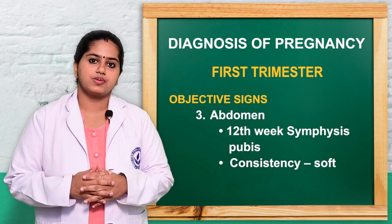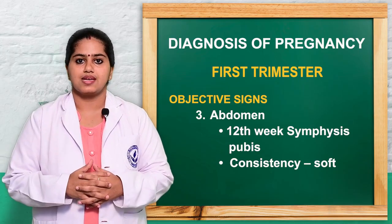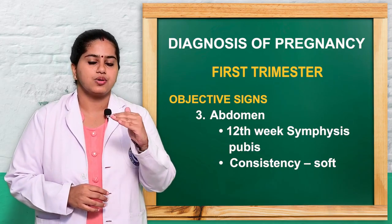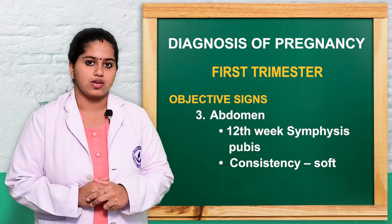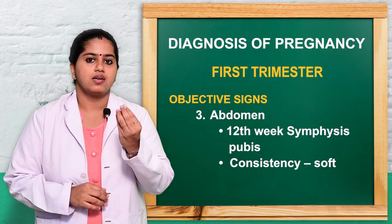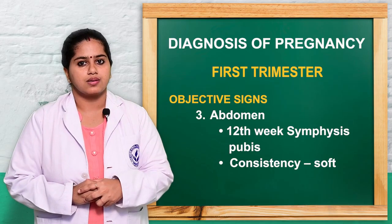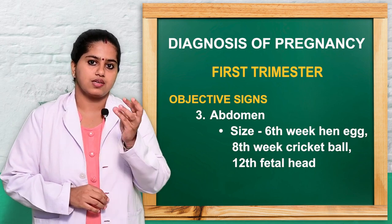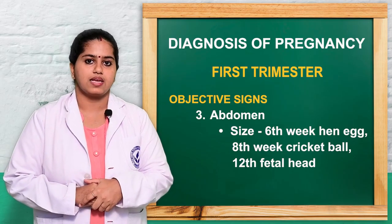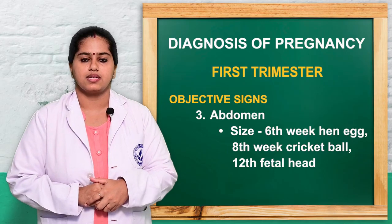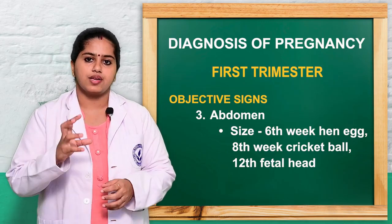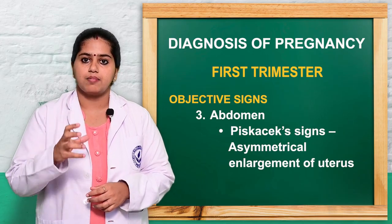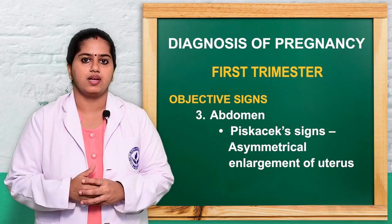The next objective sign is uterine growth, which can be assessed in the abdomen, though much growth does not take place in the early trimester. On palpation, the uterus is palpable at the symphysis pubis at the 12th week of gestation. Regarding size, shape, and consistency, the uterus is soft; in size it resembles an egg shell at 6 weeks, a cricket ball at 8 weeks, and a fetal head at 12 weeks. The shape changes from pyriform to globular. Piscacek's sign refers to asymmetrical uterine growth due to lateral implantation of the embryo.